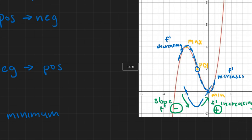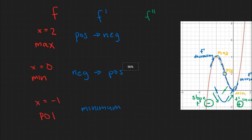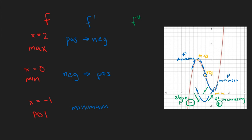So f'' at negative 1, it'll be negative here and become positive. So we know that at negative 1, when f has a POI and when f' has a minimum, f'' will go from negative to positive.